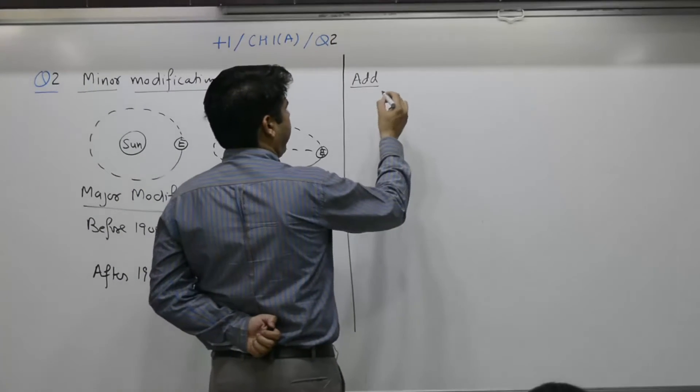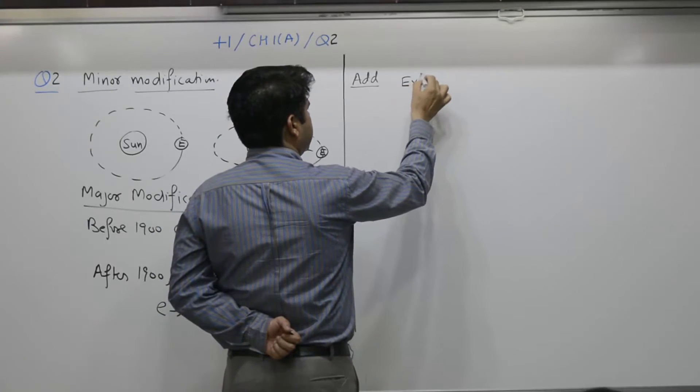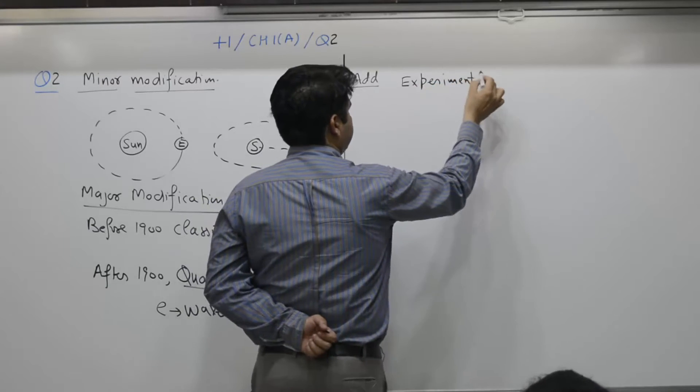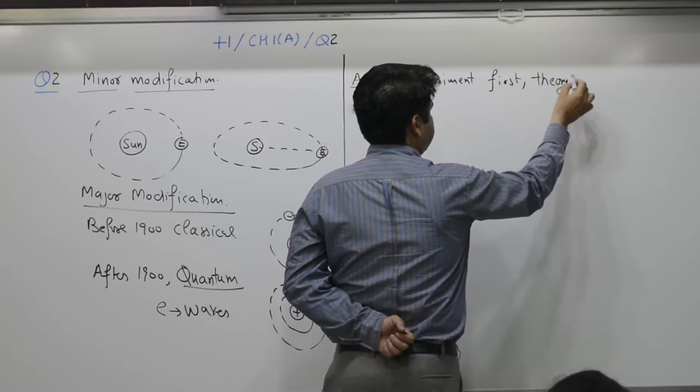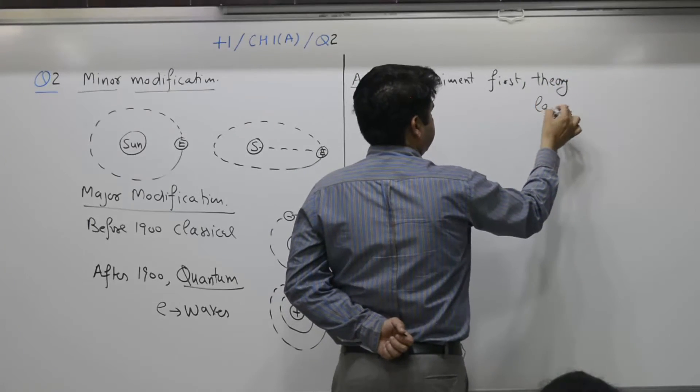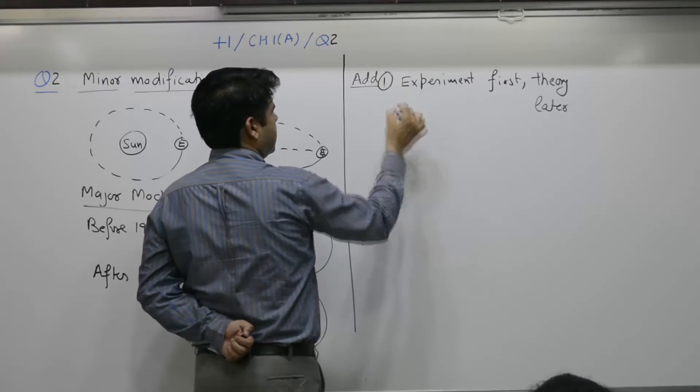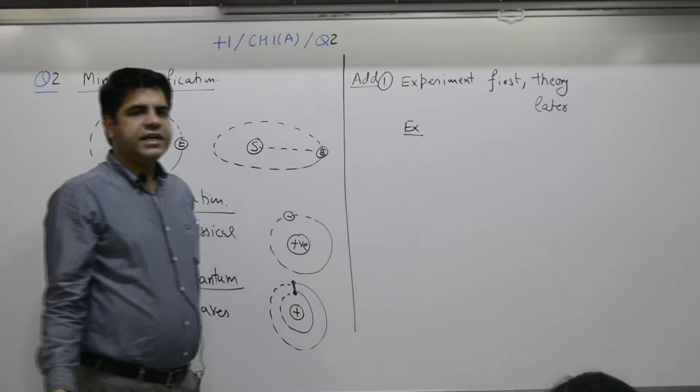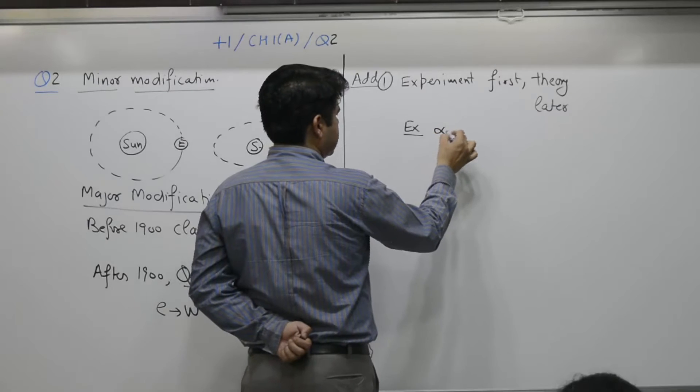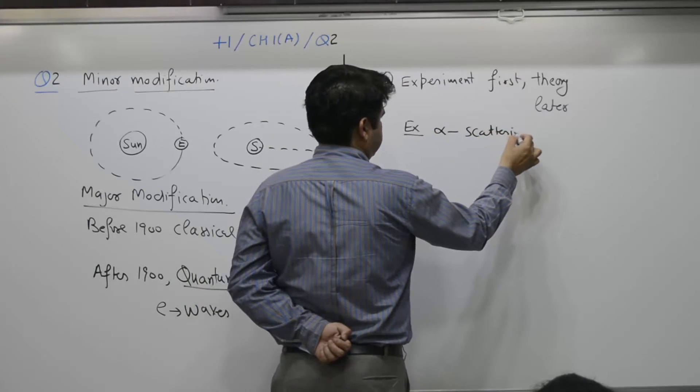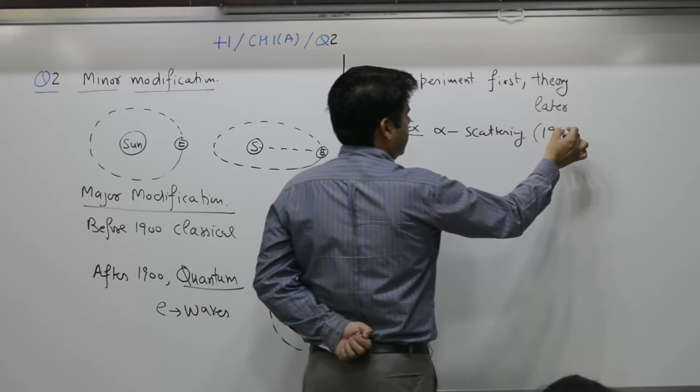Two possibilities. Possibility one: experiment first, theory later. Example - alpha scattering experiment. Alpha scattering experiment was performed by Rutherford in 1911.